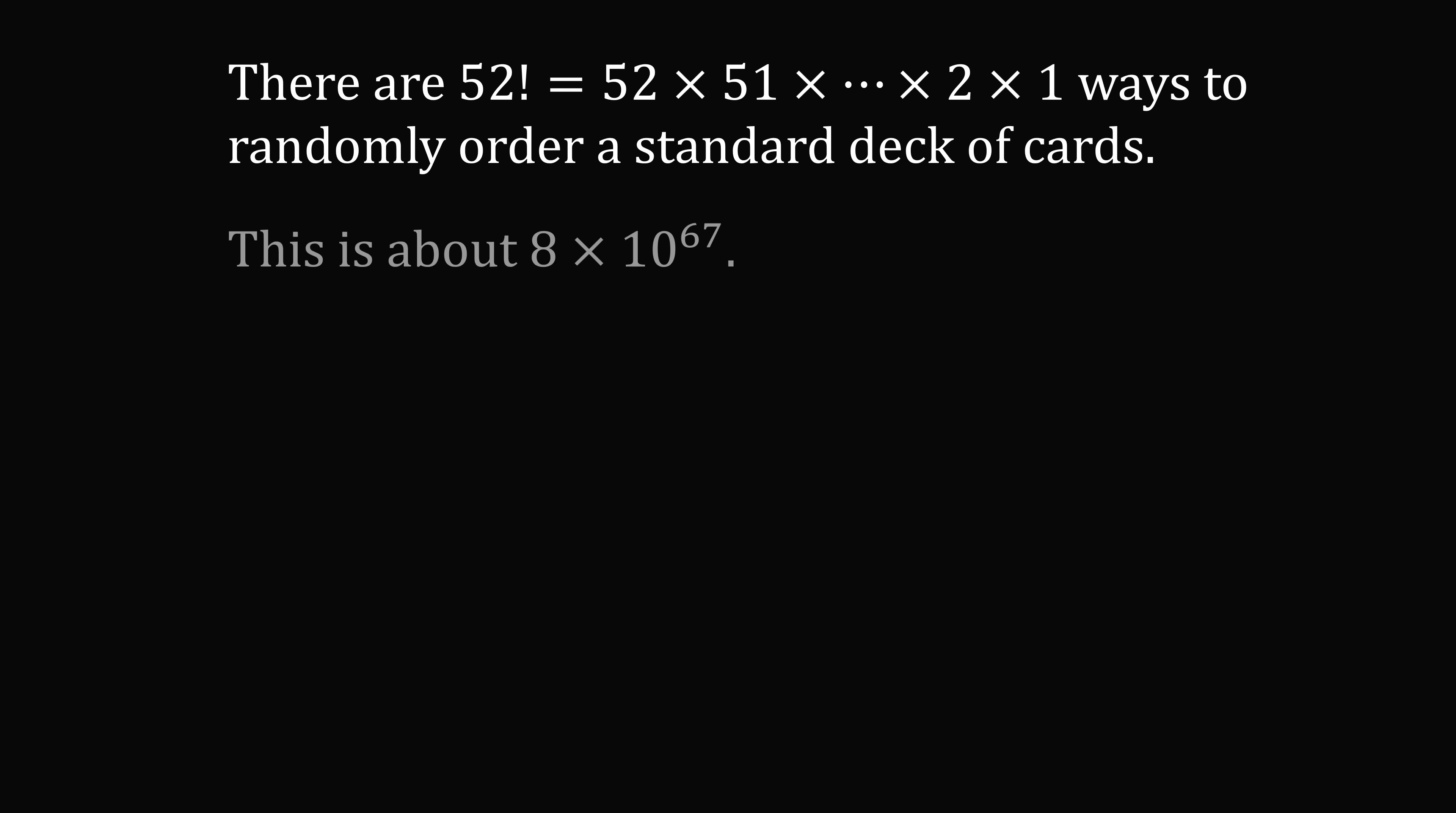Now let's solve problem 2. So in a deck of 52 cards, there are 52 factorial ways to randomly order the deck of cards. This is about 8 times 10 to the power of 67, which is an astronomically large number.